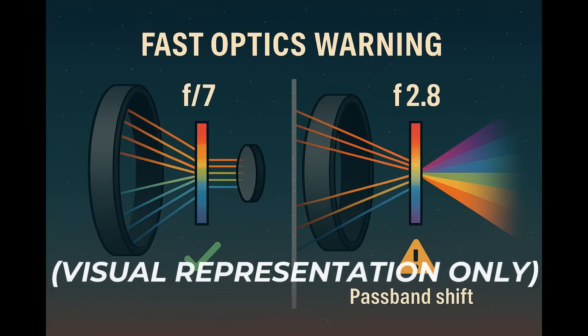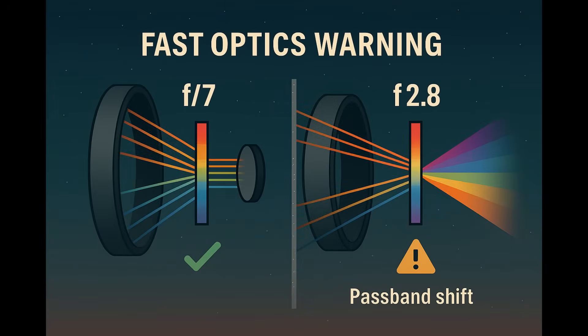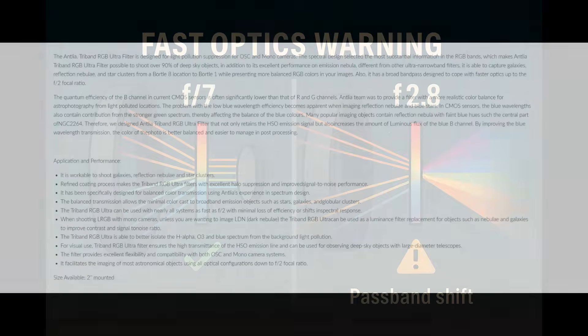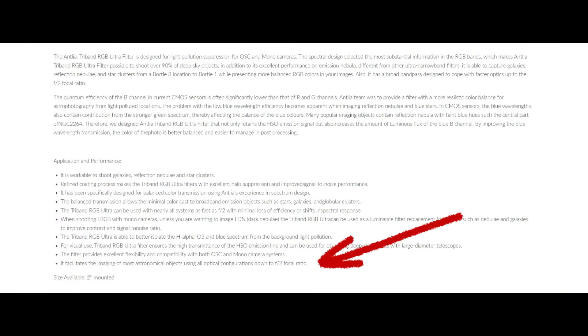A quick word of caution when choosing filters: if you're using fast optics — typically f/4 or lower — make sure the filters you choose are optimized for fast systems. At faster focal ratios, light hits the filter at steeper angles, which can shift the pass band and reduce transmission, especially with narrow filters like 3 nm. Look for filters specifically labeled for high-speed systems or fast optics. Most manufacturers like Antlia, Astronomik, and Chroma will note this in the filter specs — it's a small detail that can make a big difference in performance.